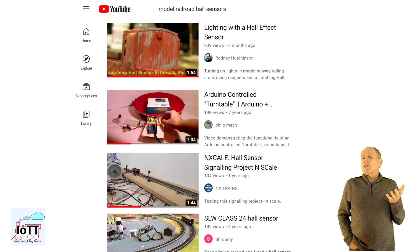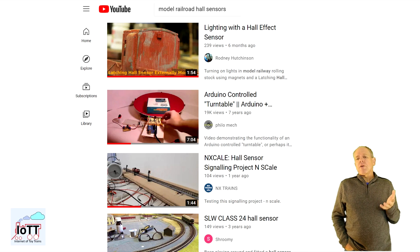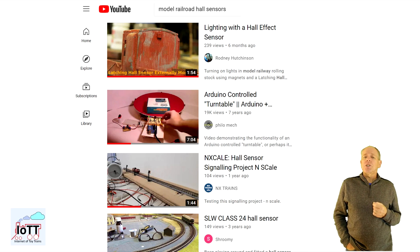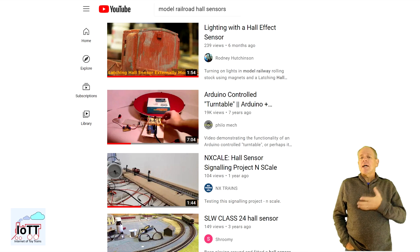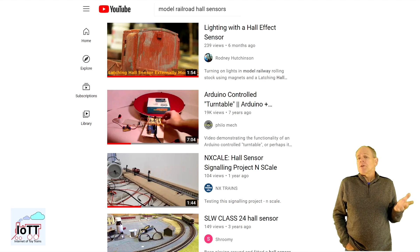Searching for model railroad related applications does not produce a lot of results. There is a video showing how a Hall sensor is used to index a turntable. Other applications make use of it to switch the lights inside a railcar when entering and leaving a station or to activate a horn when entering a tunnel. One application uses Hall sensors for trend detection for a simple signaling system. But as we see from these examples, Hall sensors are used for rather simple applications, typically using an on-off signal as input element.